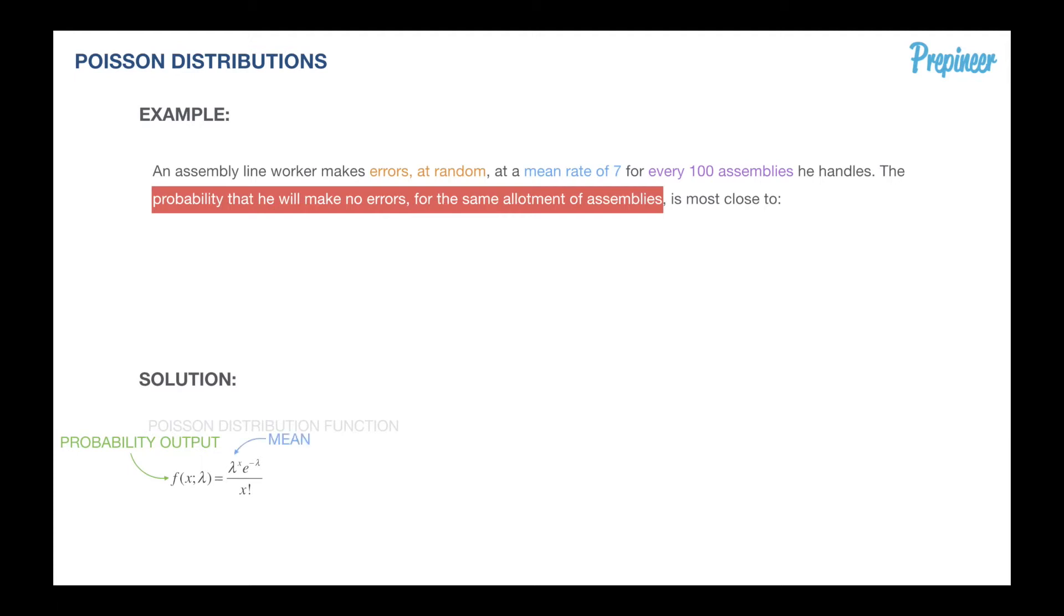Let's pull that back over to our solution and define these. We know that the function is going to output some probability. Lambda is our mean and X is our random discrete variable. Let's highlight what we are given. We're given that the mean is seven errors per allotment. The interval is going to be a hundred assemblies. It's very important to recognize whether the interval in which this mean is occurring is equivalent to the interval in which you're being asked to define a particular value. In this case, we are looking for the probability that he will make no errors for the same allotment of assemblies, so our interval is 100 assemblies. Our random variable X is zero errors, and we're looking for that probability output.